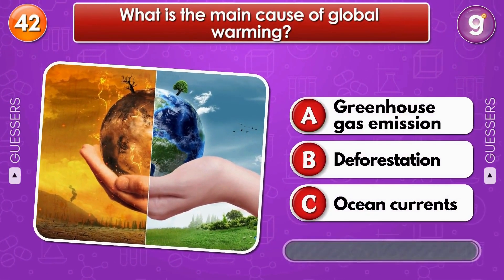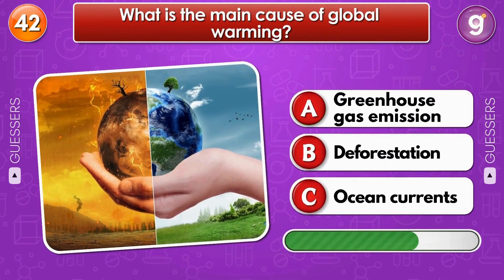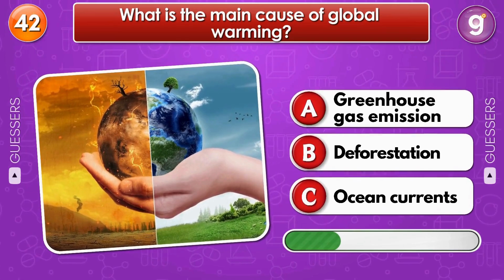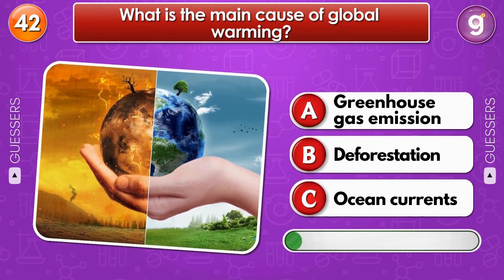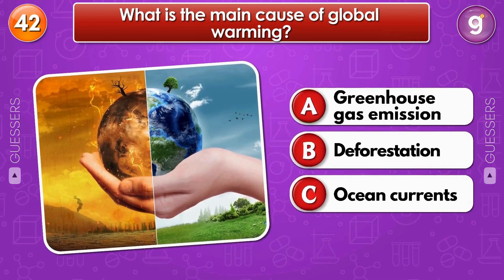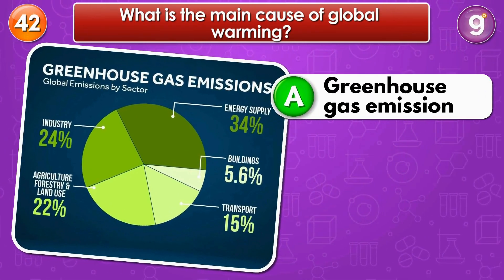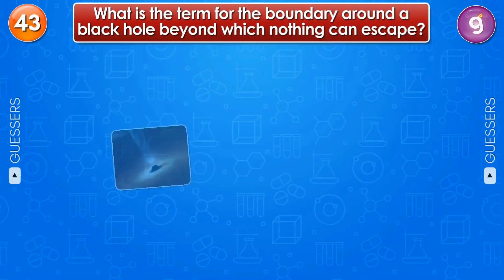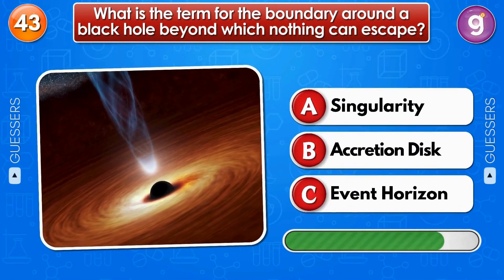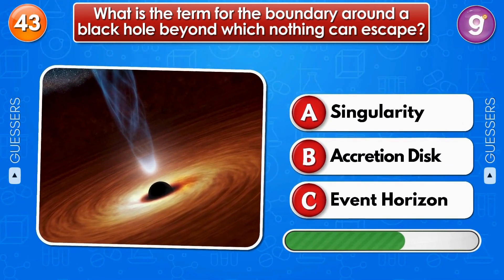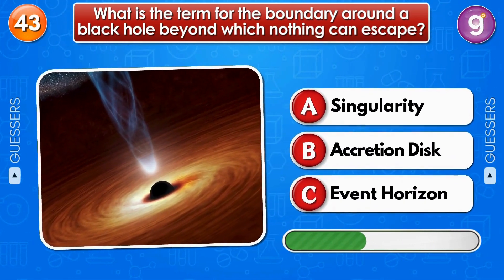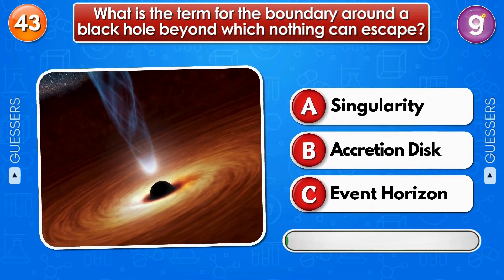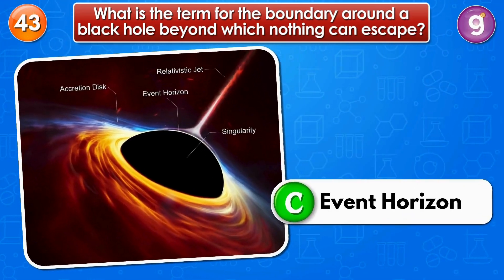What is the main cause of global warming? Greenhouse gas emissions. What is the term for the boundary around a black hole beyond which nothing can escape? Event Horizon.